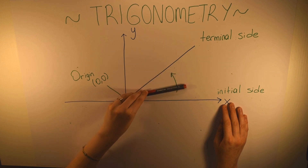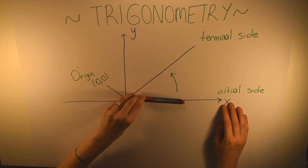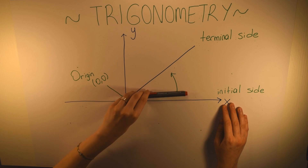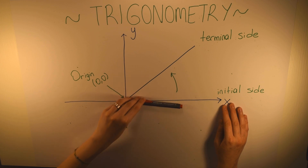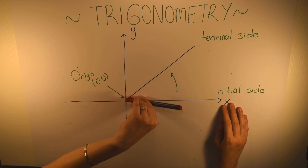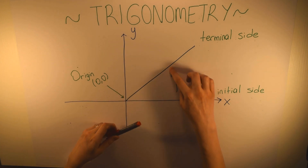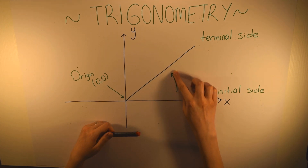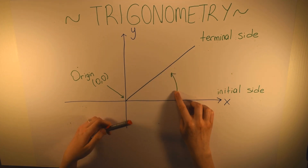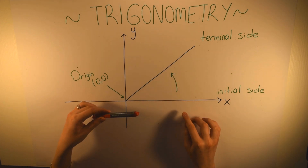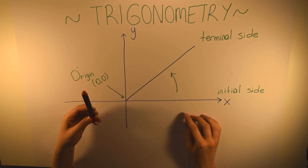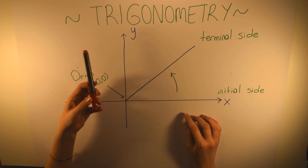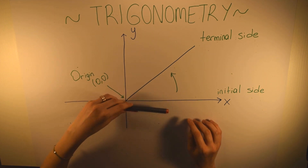A positive angle is made by a rotation in the counterclockwise direction. As you can see here we have a positive angle, and a negative angle is made by a rotation in the clockwise direction.